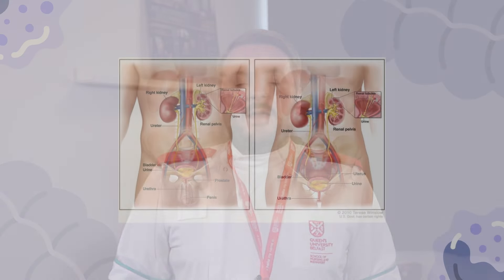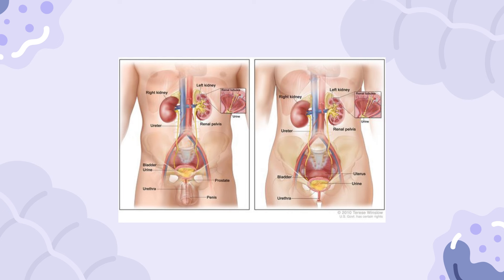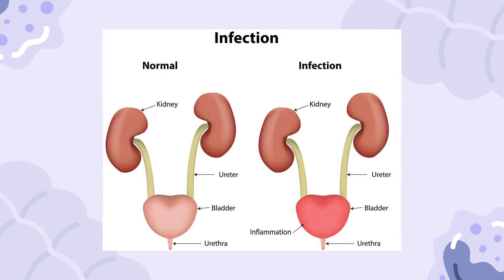Jane is a resident of our care home. She has recently developed a urinary tract infection. A urinary tract infection, sometimes called a UTI, is a bacterial infection in the urinary system which includes the bladder, urethra and kidneys. UTIs can lead to delirium in older people, especially when a person is not eating or drinking, frail or has dementia, because the infection can disrupt normal bodily functions and lead to confusion and cognitive changes due to inflammation and toxins produced by the infection.